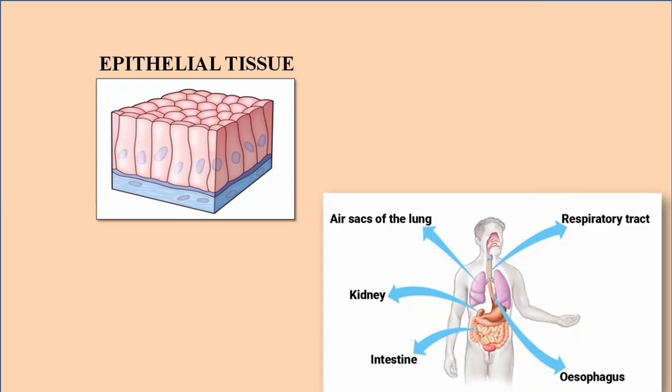Epithelial tissue is a thin lining that provides protection. It is the outermost surface of the human body and also lines the internal organs. As it surrounds different organs, it is involved in the transport and exchange of ions and different materials within the different organs of the human body.